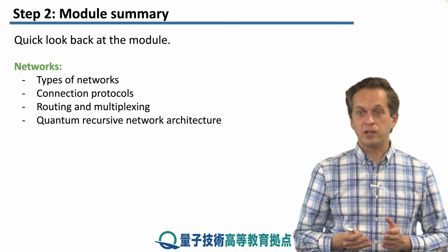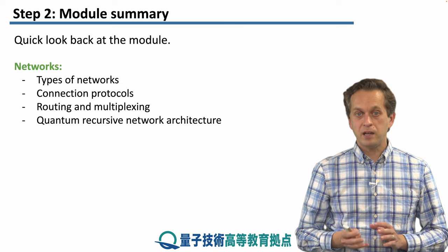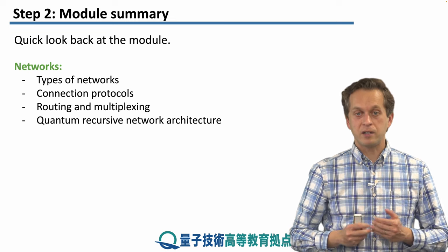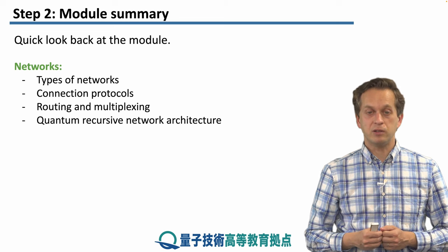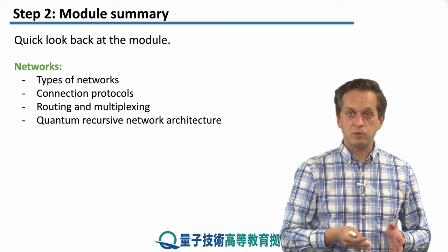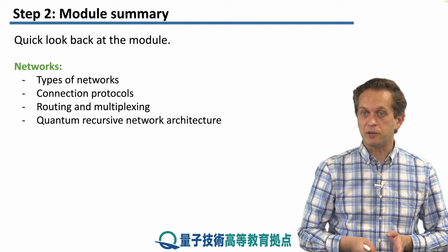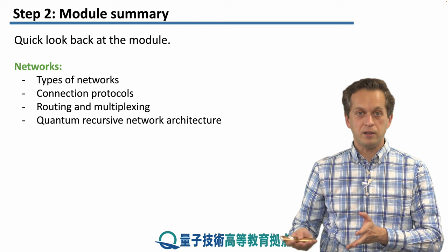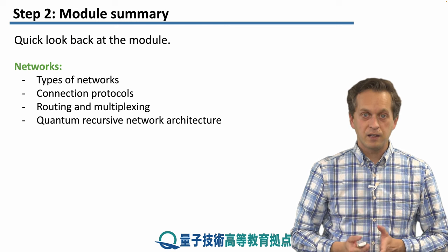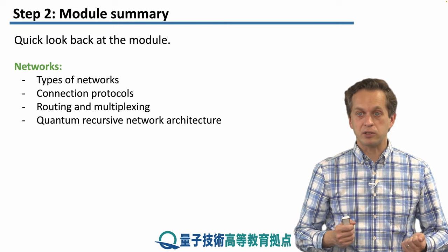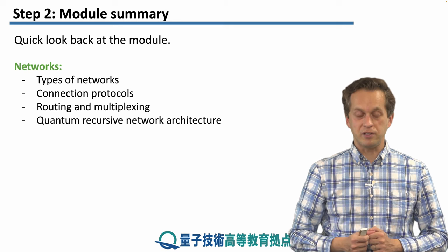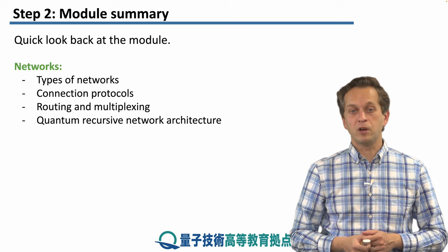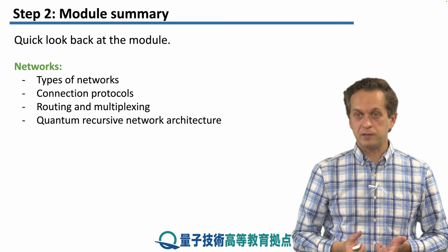After hardware, we started looking at networks. And here this was a mixture of classical networking as well as new quantum networking. We started with thinking about what types of networks exist classically. We started very small with system area networks and system interconnects and went through local area network, metropolitan area network, up to wide area networks. Then we were thinking how can we set up connections between two distant parties in a quantum network. We talked about connection protocols.